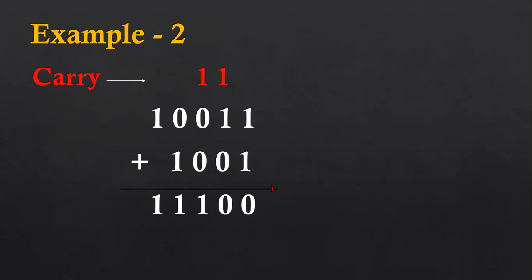Now let's take a look at example number two, which is going to demonstrate how we can perform addition on 1 and 1 so that a carry will be generated. Here you can see the first column — both corresponding bits are 1 and 1. So if we add two ones, the result will be zero, and you have to put a carry of one to the next higher column, as I mentioned here.